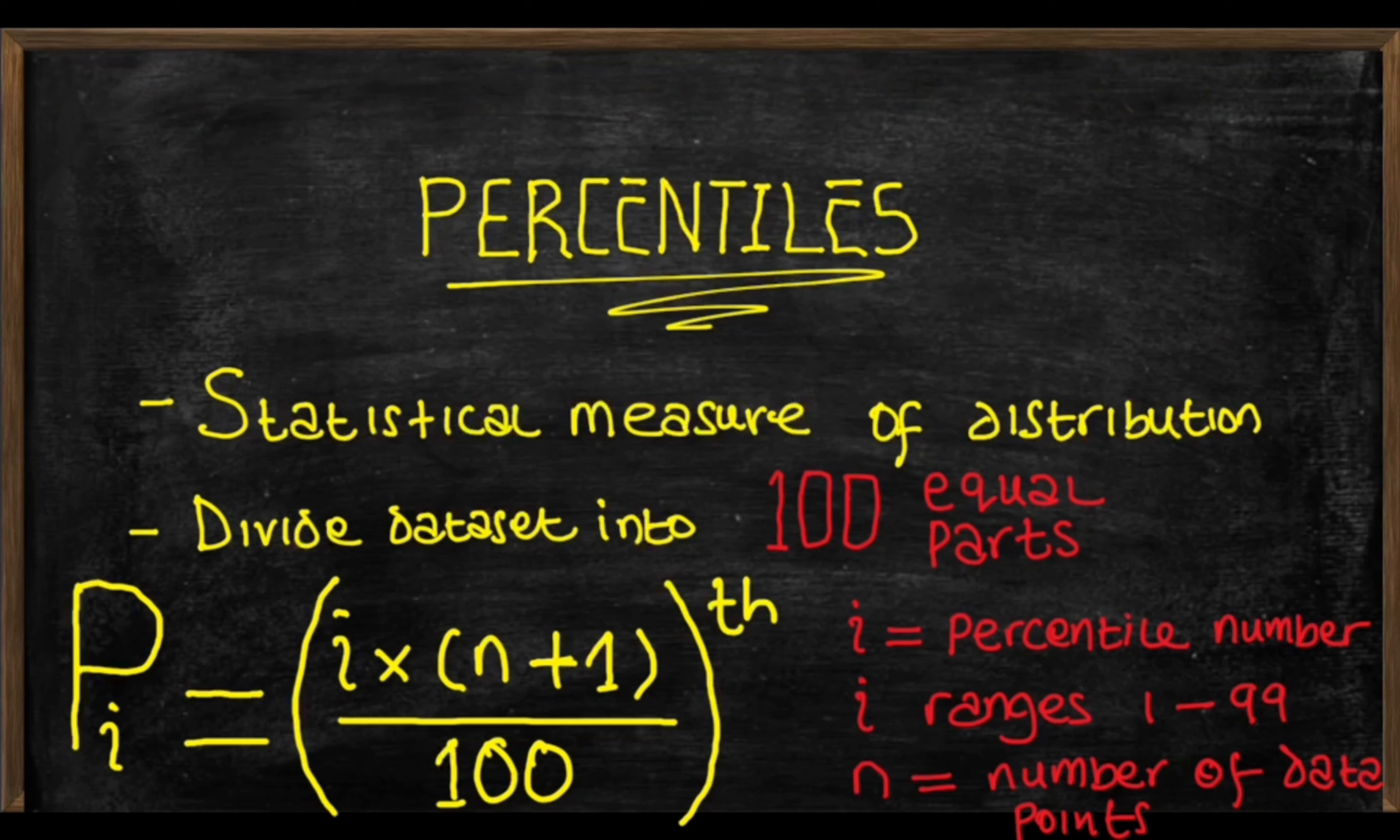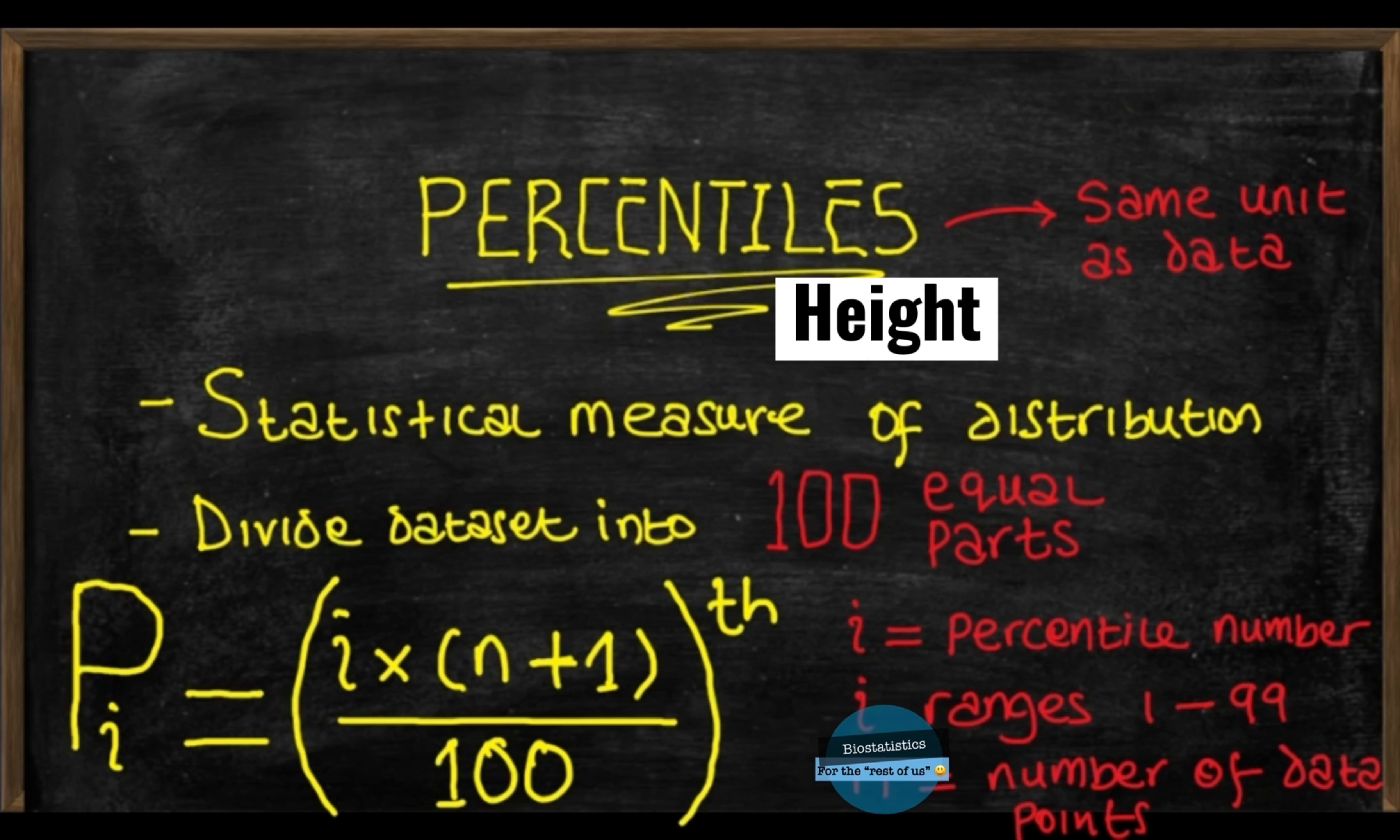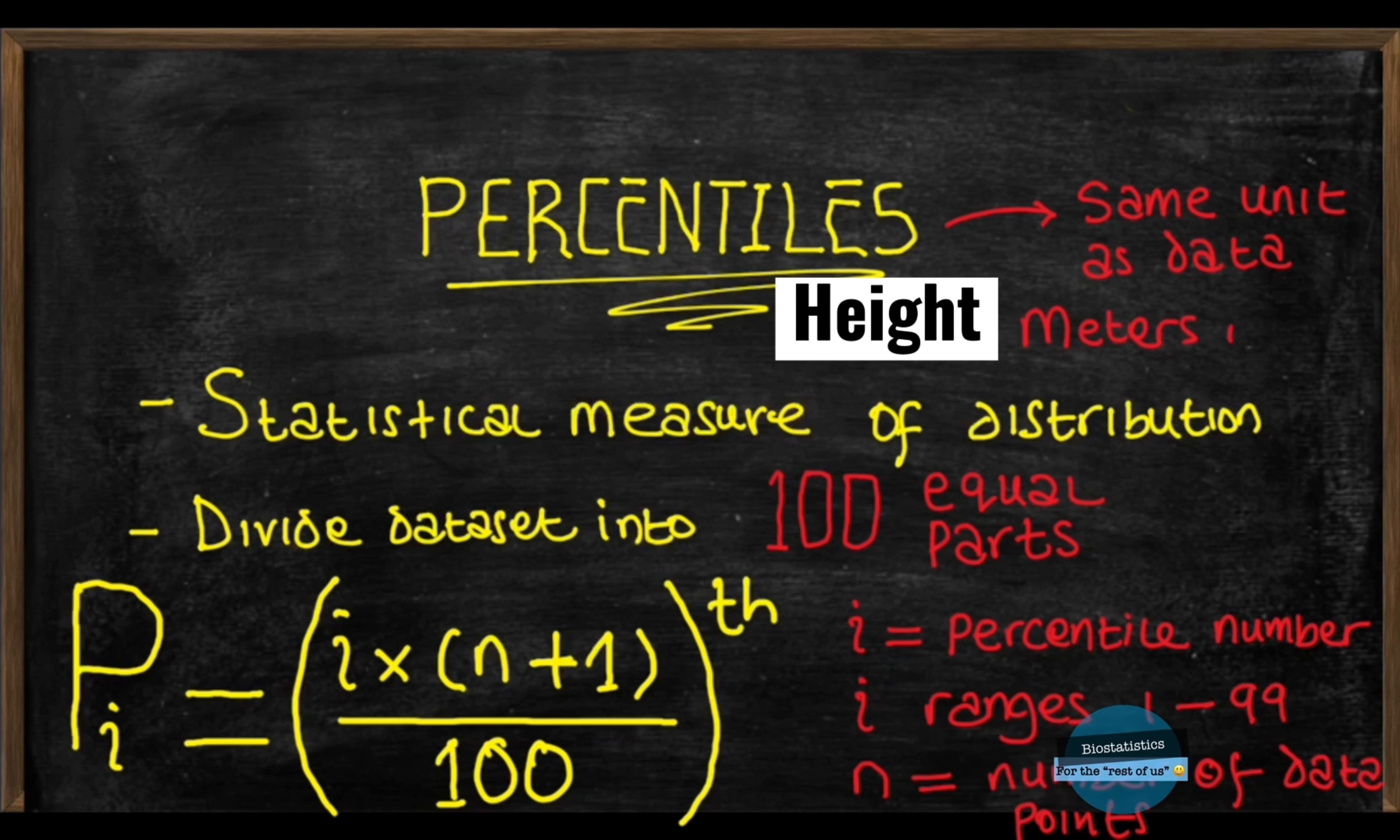Percentiles, just like quartiles and deciles, are expressed in the same unit of measurement as the data values. They are not expressed in percentage. For example, if the data we're dealing with refers to height, then the corresponding percentiles will be expressed in meters or feet or whatever is the unit that the data is in.